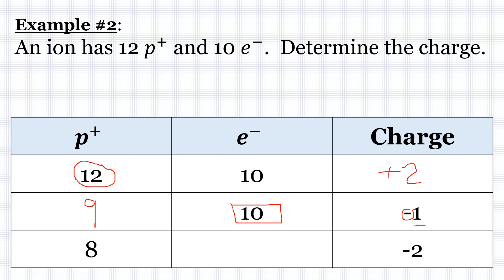In the final row, we know there are eight protons and a charge of negative two. That means we need two more electrons than protons, so the number of electrons is ten. There's a difference of two, and since there are more electrons than protons, we have a negative charge.